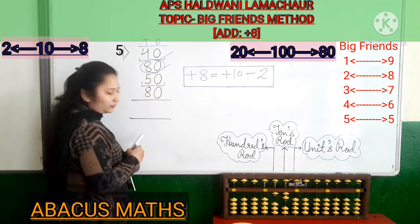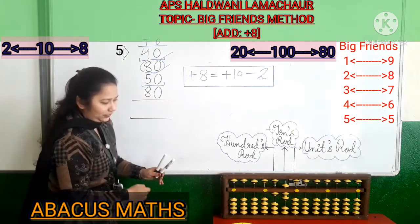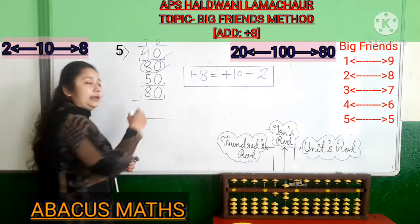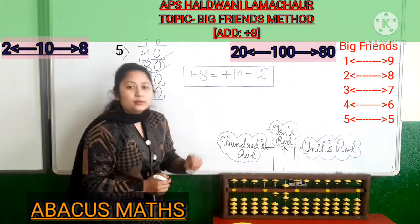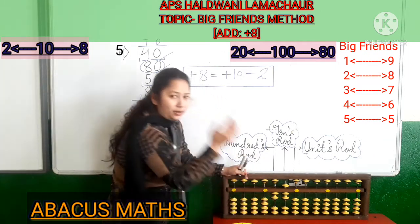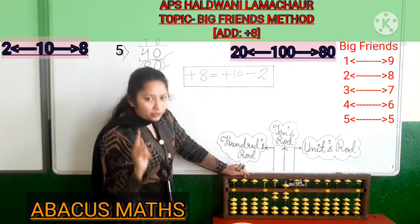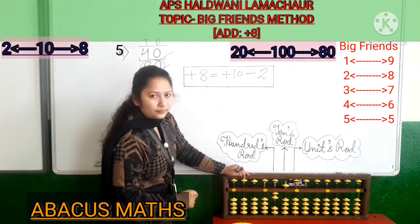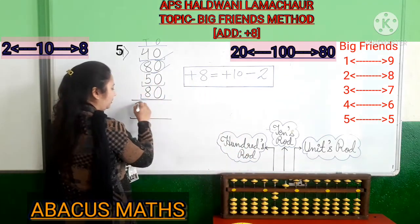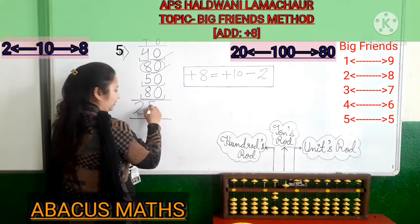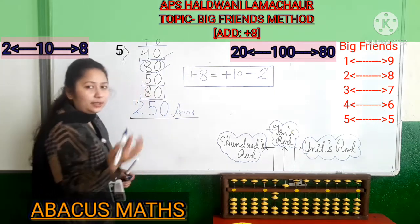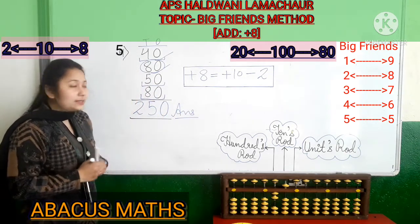Now add 50: in the 100s rod, the lower bead value is 50. Now add 50 again using the same method. For adding 80 again, add 100 in the 100s rod and minus 20 from the 10s rod. Now count the beads: 2 in the 100s rod, 5 in the 10s rod, and nothing in the 1s rod means 0. So your answer is 250.